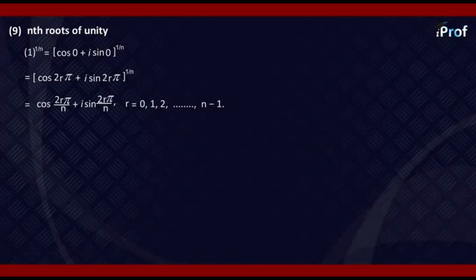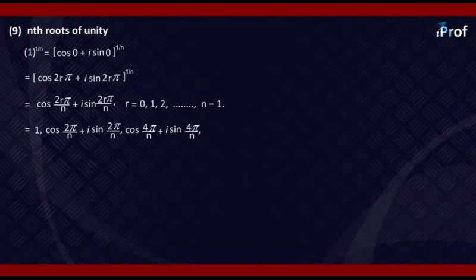Putting these values, you get: when r = 0, we get 1; when r = 1, you get cos(2π/n) + iota sin(2π/n); when r = 2, you get cos(4π/n) + iota sin(4π/n), and so on.